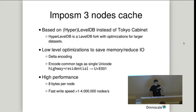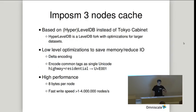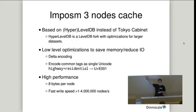A few things we changed with Impossum 3: the nodes cache and also the ways cache are now based on HyperLevelDB, which is a bit faster than Tokyo Cabinet. We did more low-level optimizations, improved the delta encoding, and we encode common tags as a single Unicode value, saving a lot of memory. This is only internal — the user doesn't see it. It requires about 8 bytes per node, and on even a notebook you can parse and cache millions of nodes per second.